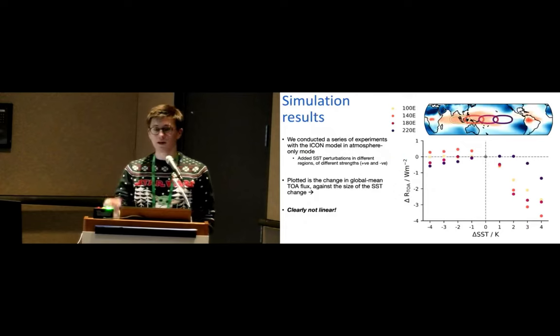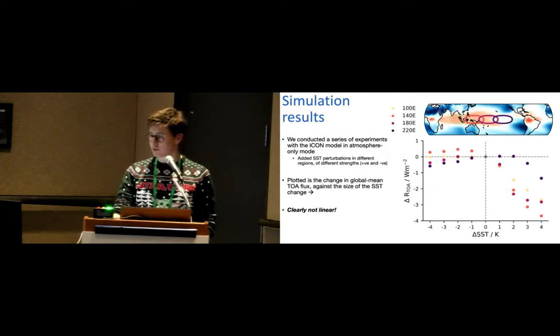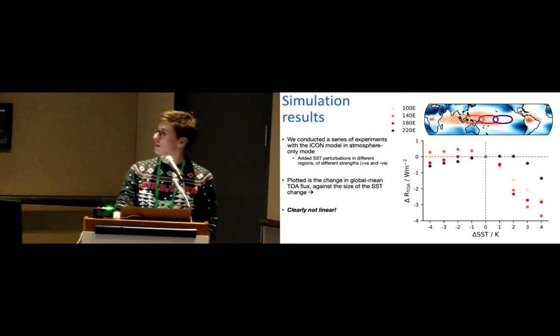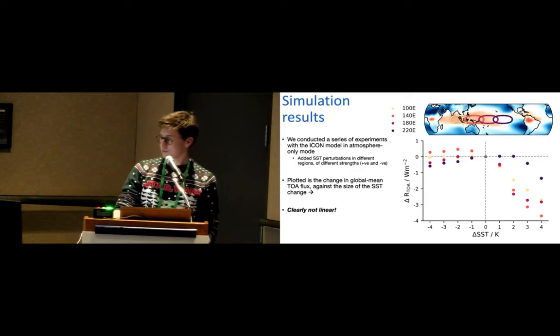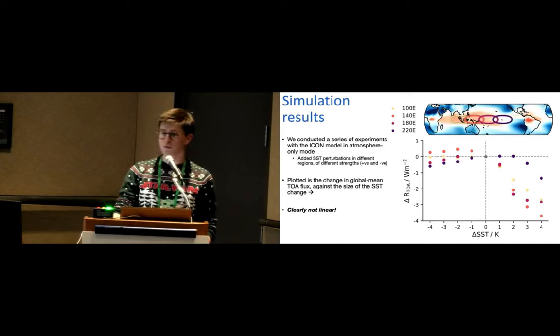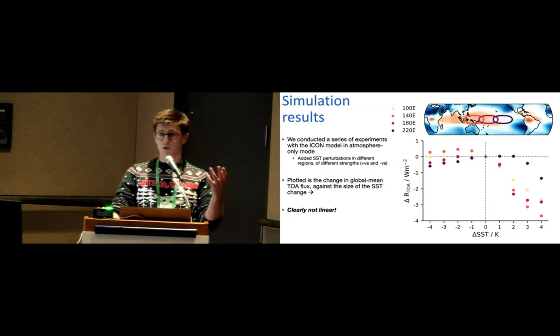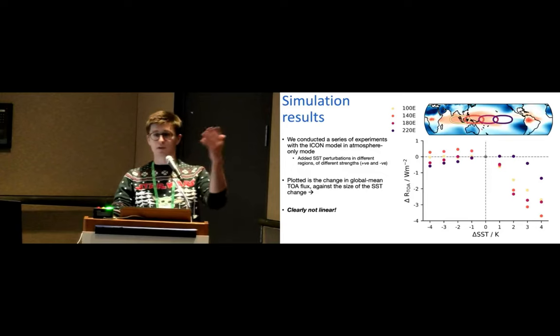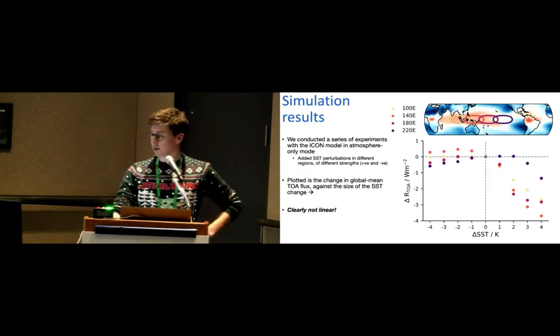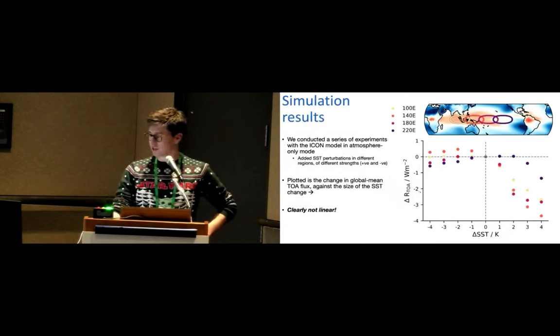So that's where we come in. What we did was we took the ICON model run in atmosphere-only mode, and we chose four patches for these kind of SST perturbations, spanning regions of intense convection on the kind of Indonesian ocean, the maritime continent, all the way over to a region which is characterized in our model by low clouds and subsidence here. And for each of them we ran experiments with kind of plus or minus 1k, plus or minus 2k, etc. And what I've plotted here is the global mean TOA flux for each of these experiments versus the size of the warming.